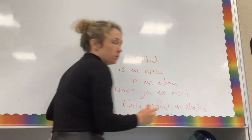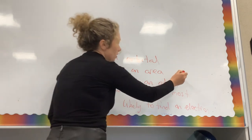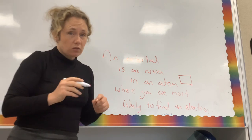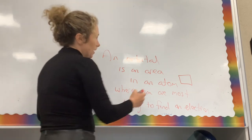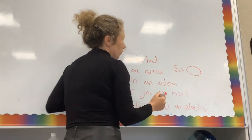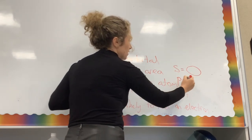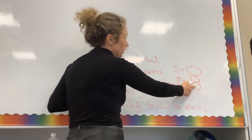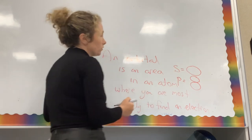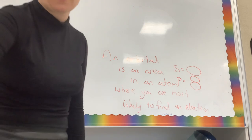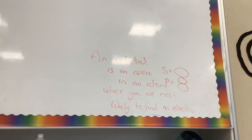In our electron arrangement diagrams, those little boxes each represent an orbital. You're expected to know the shape of two types: an s orbital is spherical, and a p orbital has a figure-of-eight shape. There are three p orbitals (three boxes) for each p sublevel, and one box for each s sublevel.